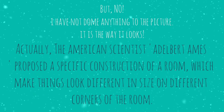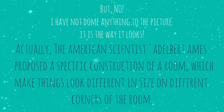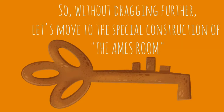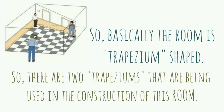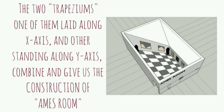The American scientist Adelbert Ames proposed a specific construction of a room which makes things look different in size in different corners of the room. The room is trapezium-shaped. There are two trapeziums used in the construction of this room, placed in two different axes — the x-axis and the y-axis. One trapezium laid along the x-axis and the other standing along the y-axis combine and give us the construction of the Ames Room.